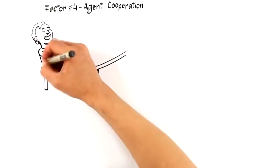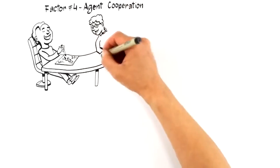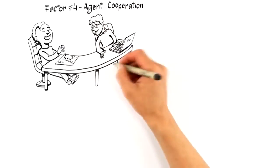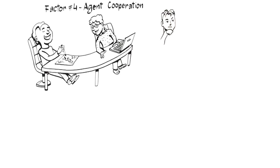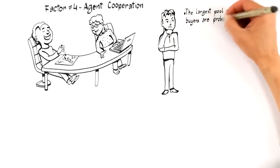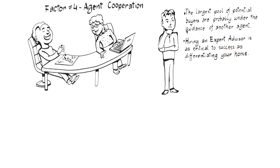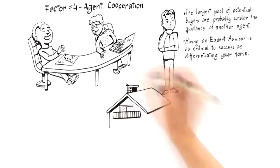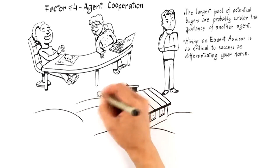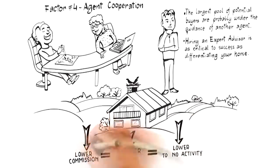Agent cooperation simply predicts that there is a greater than 50% chance that once your home is exposed to the market, another real estate professional will bring you a buyer. Since the largest pool of potential buyers are probably under the guidance of another agent, it's critical that your expert advisor allocate a portion of their marketing budget to get your home in front of the top agents in the market who represent buyers. This means hiring an expert advisor who understands the current incentives that motivate other agents to bring their best clients is as critical to success as differentiating your home is to attract targeted buyers. Be wary of the agent that offers to accept lower commission. Often this leads to a lower compensation being offered to the agents that potentially have a buyer for your home, resulting in little to no activity on your house.